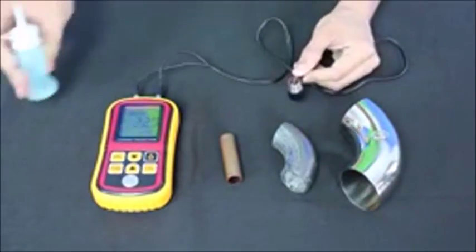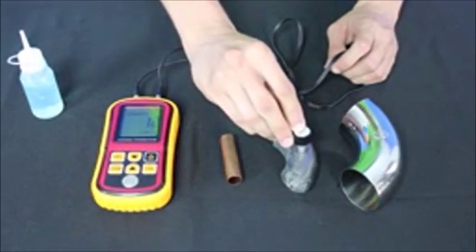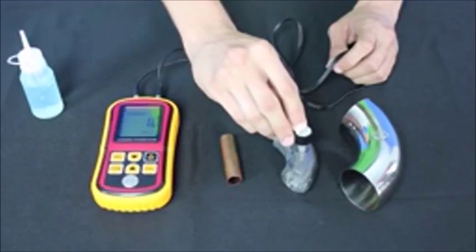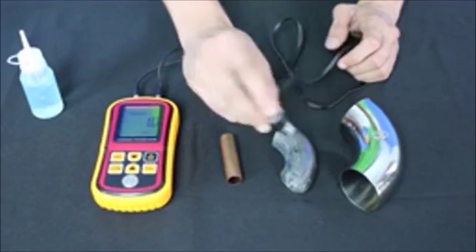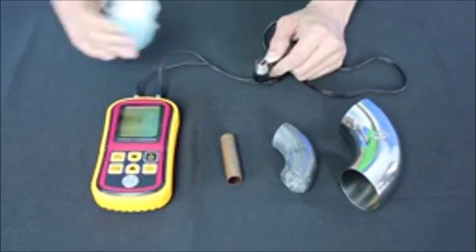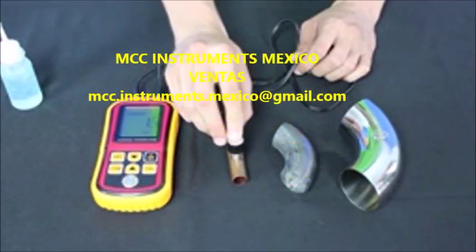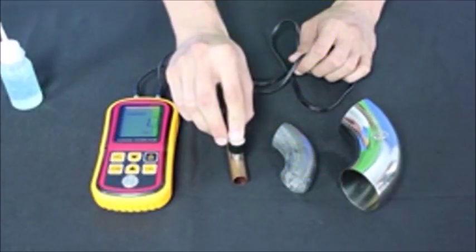There we go. Now that the thickness gauge has been calibrated, let's measure some metals. As I mentioned before, the first thing we want to do is add some gel to the sensor tip. And the next thing we want to do is start measuring metals: 1.2, 3.2, 3.7.